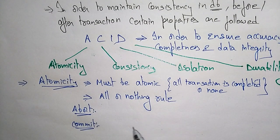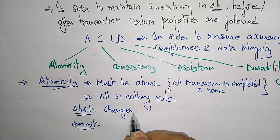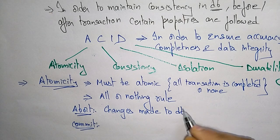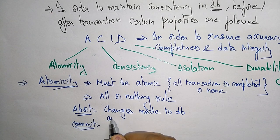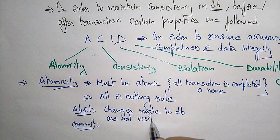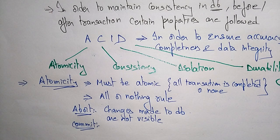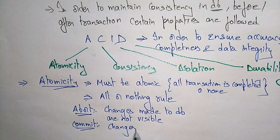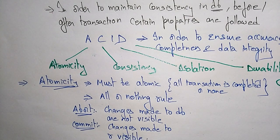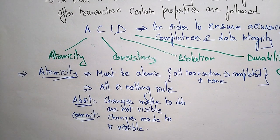Abort means changes made to the database are not visible. When a transaction is aborted, the changes are not visible. Commit means changes made to the database are visible. After completion of the transaction, when you use the commit statement, whatever changes were made in the database become visible.